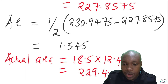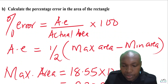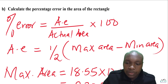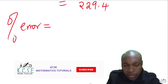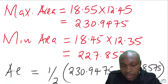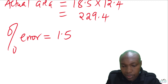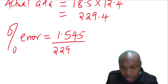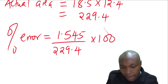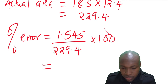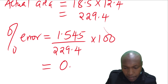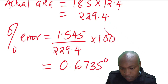Now we have everything needed to calculate the percentage error. The percentage error is the absolute error of 1.545 divided by the actual area of 229.4, multiplied by 100. Working this out using the calculator gives a percentage error of 0.6735%.